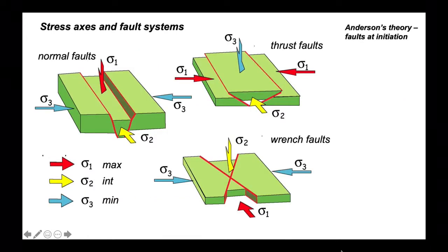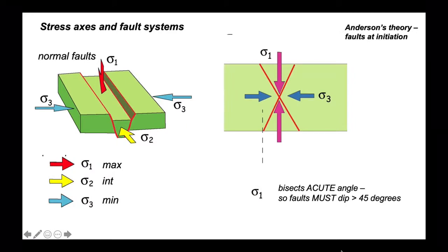Let's think about normal faults and their initiation, applying Anderson's theory of fault initiation. For normal fault structures, the maximum compressive stress is vertical. In order for that stress orientation to bisect the acute angle of conjugate normal faults, those faults have to dip at angles greater than 45 degrees.